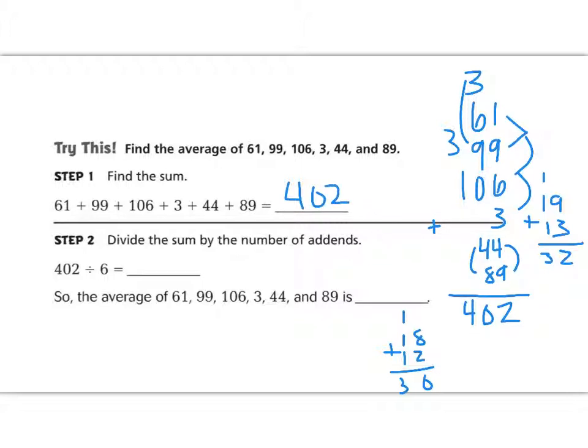Our next step is to divide our total, 402, by the number of addends. So 1, 2, 3, 4, 5, 6. So we're going to divide by 6. 402 divided by 6. 6 goes into 40, 6 times, which is 36. And we subtract. We're left over with 4. Bring down the 2. And 6 goes into 42 7 times, which is 42 even. No remainder. So it goes in a total of 67 times. So the average of this set of data is 67.